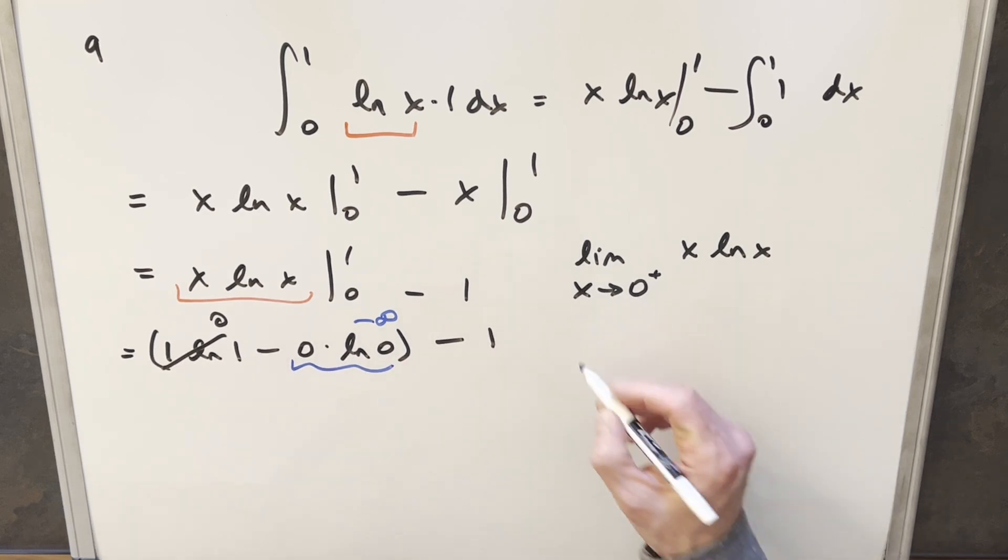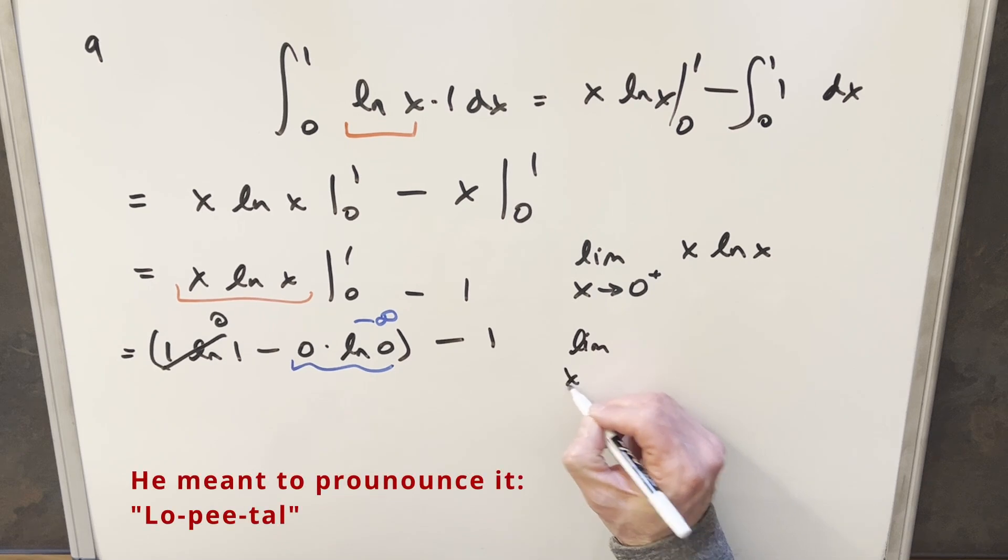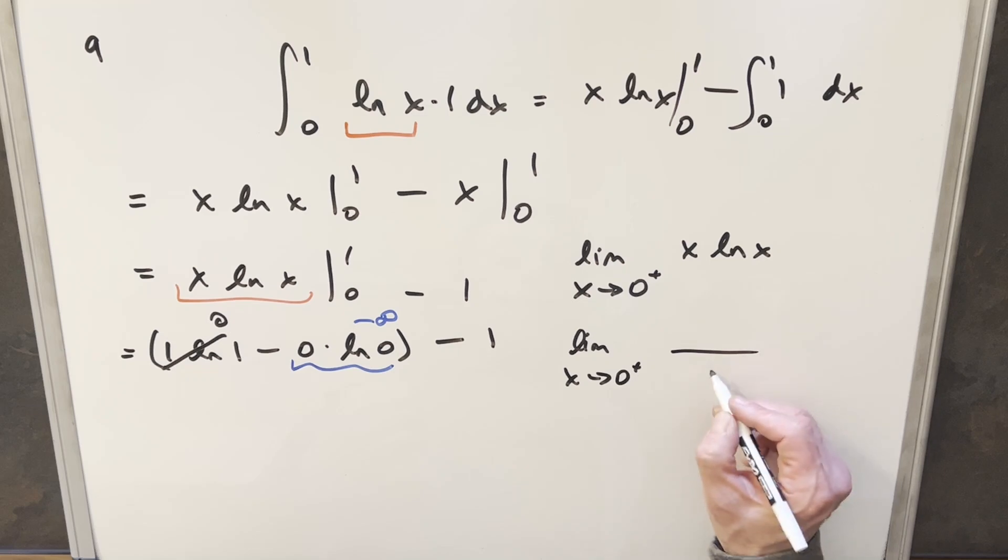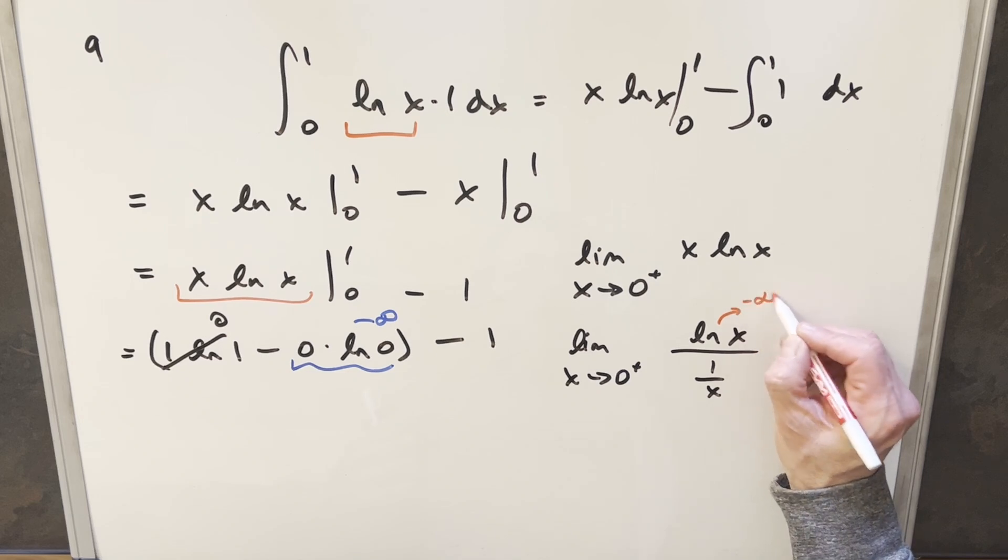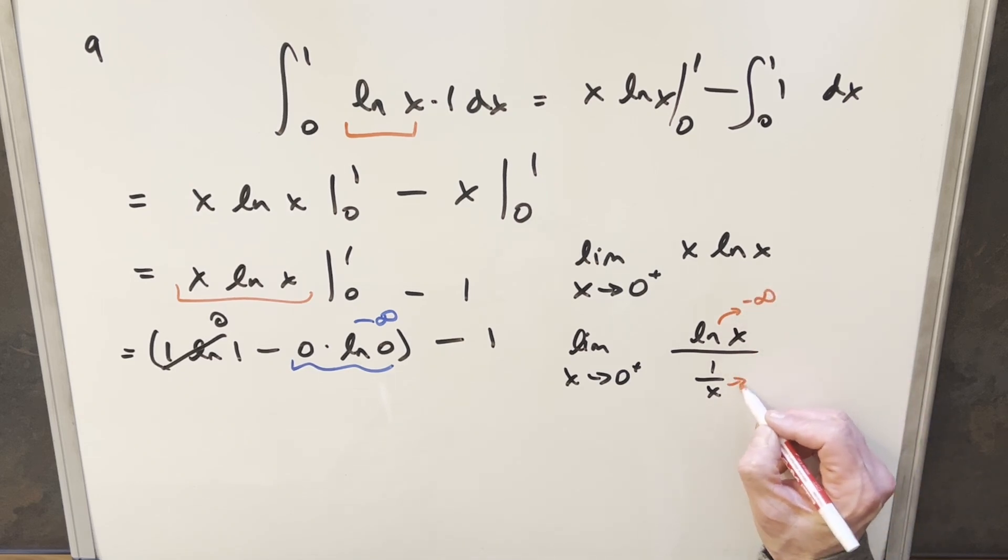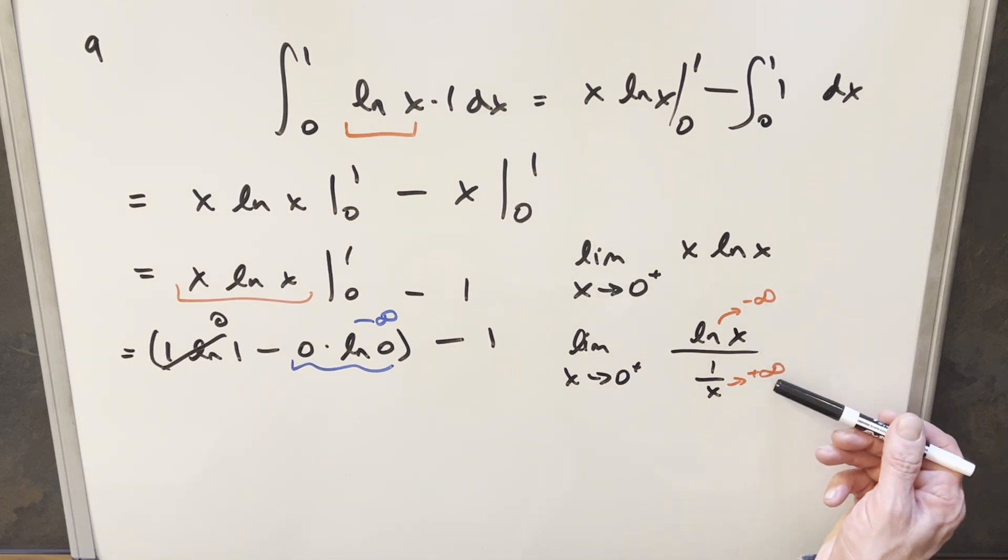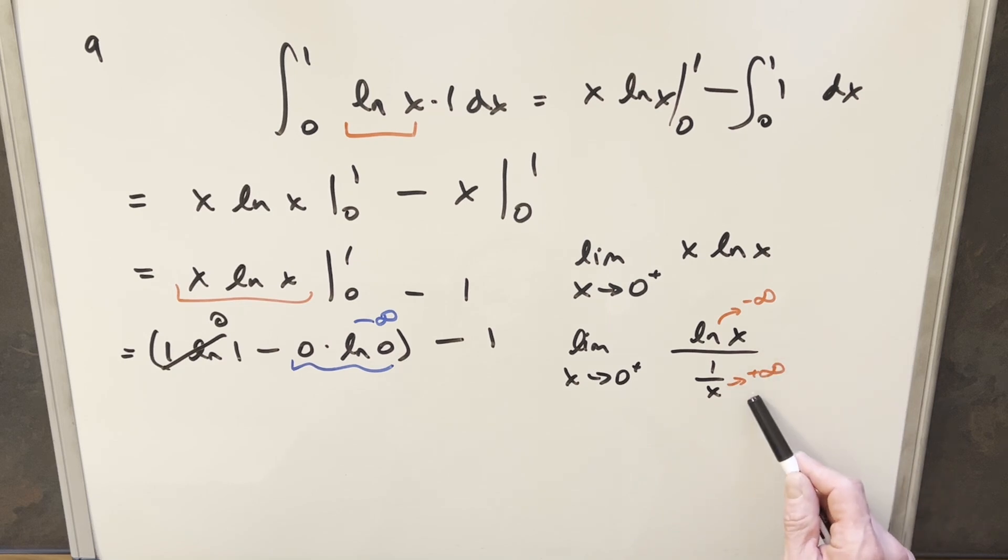I can write this x in the denominator as one over x, and we'll have our ln x up here. Looking at it this way, this piece is going to minus infinity, and this piece is going to positive infinity. Since we have an infinity over infinity case, this allows us to use L'Hôpital's rule. What L'Hôpital's rule allows us to do for this indeterminate form is we can take the limit again of the derivative of the numerator and the denominator and just reevaluate it.